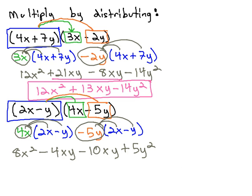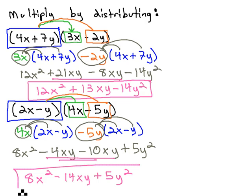Again, we have some like terms that we can combine, negative 10xy and negative 4xy. When we do that, we have 8x² - 14xy + 5y² as our final solution.